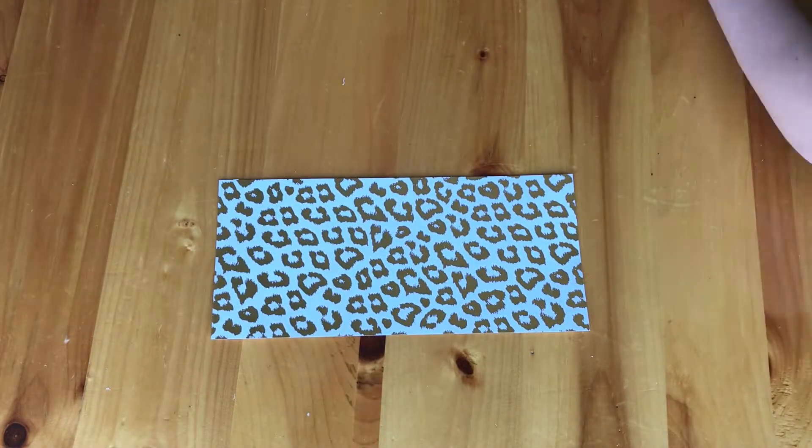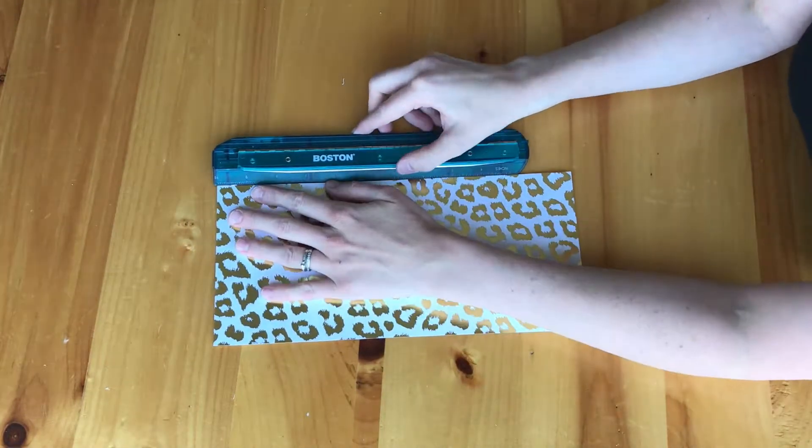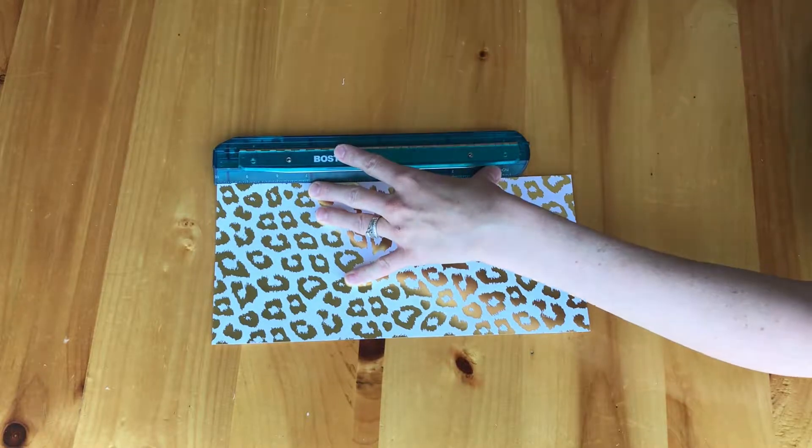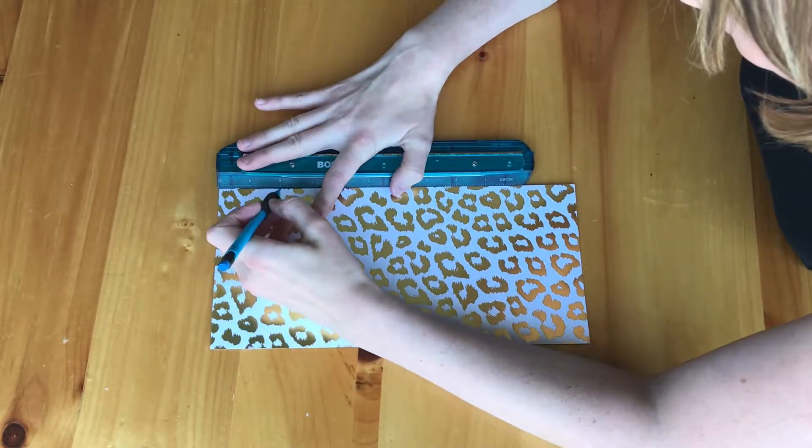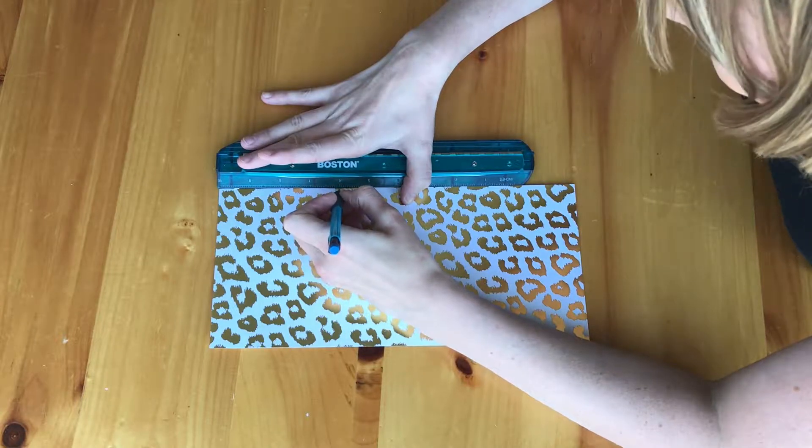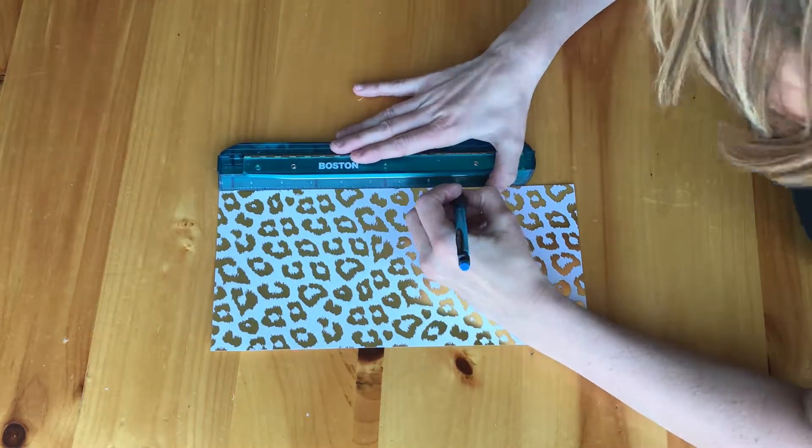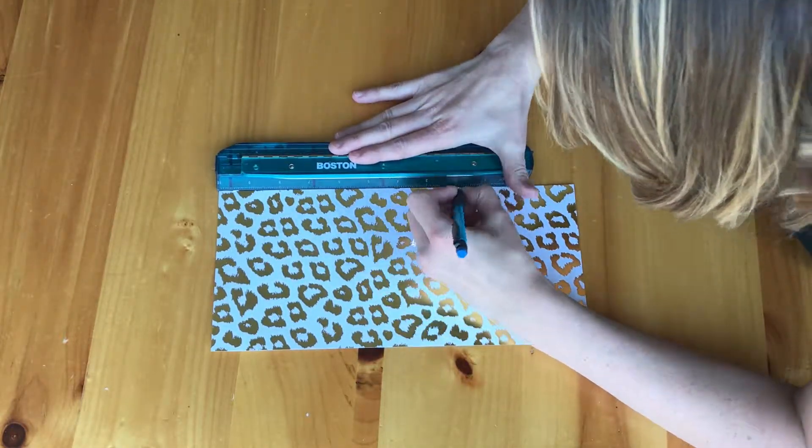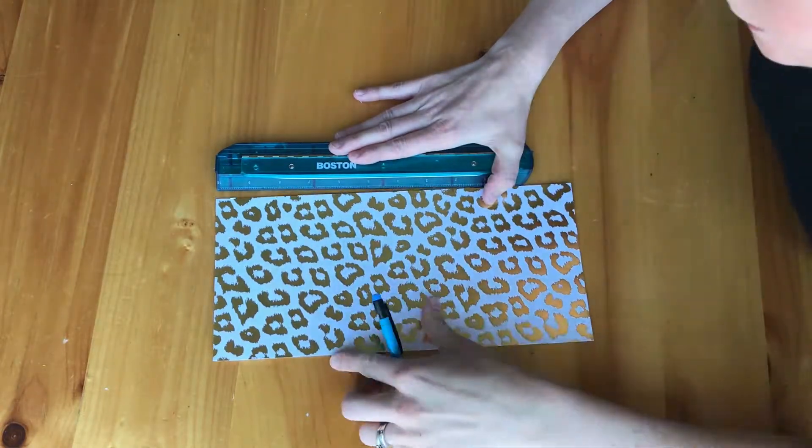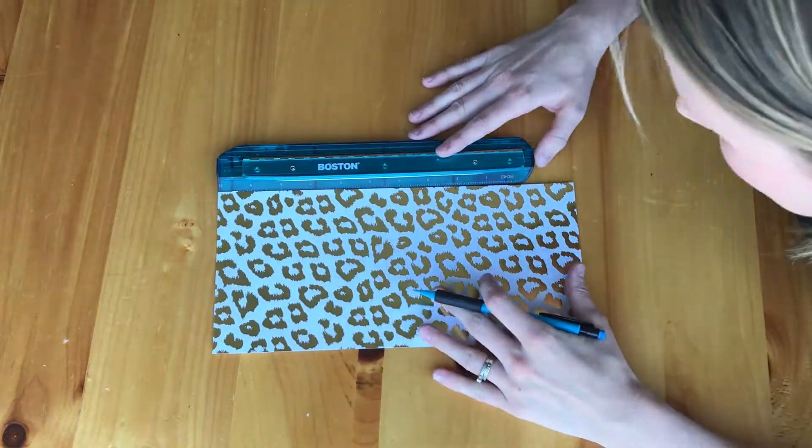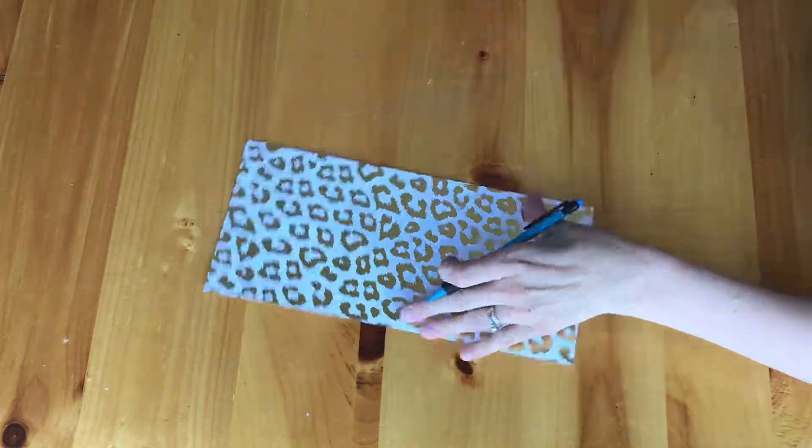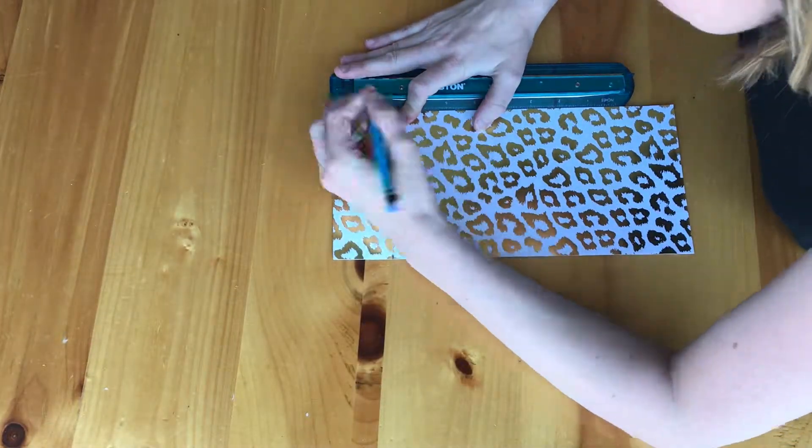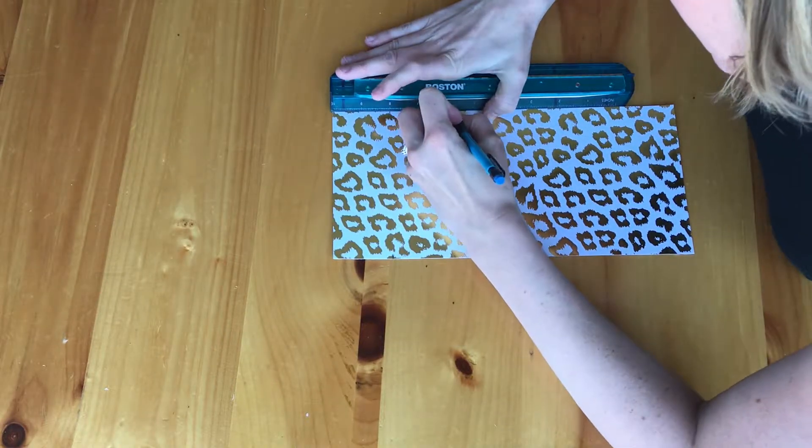So you're going to take the desired piece of paper that you want to make a card out of and you are going to cut it to 12 inches by 5.5 inches. And then you are going to mark the edges, the long edges of the card at 2 inches, 4 inches, 8 inches, and 10 inches.